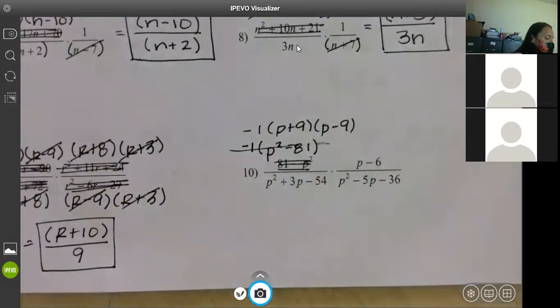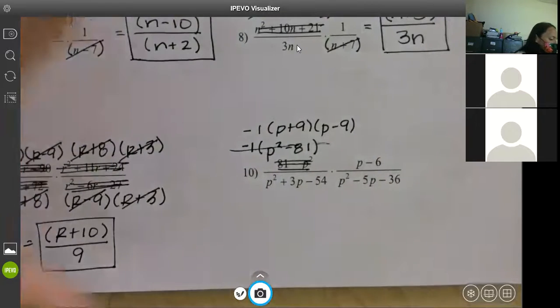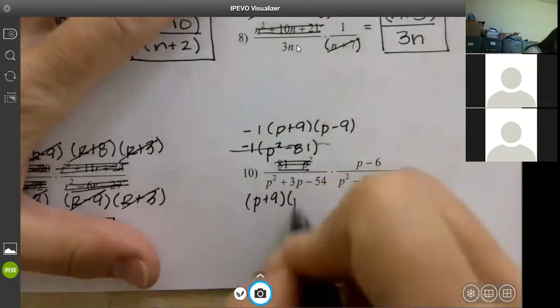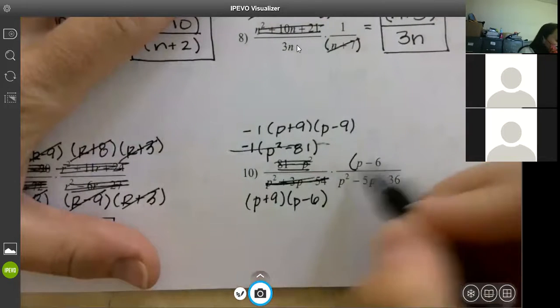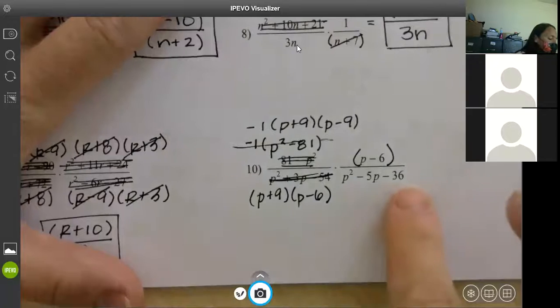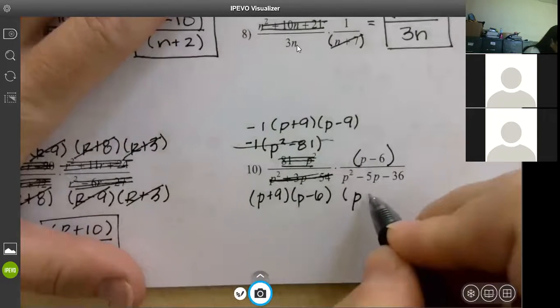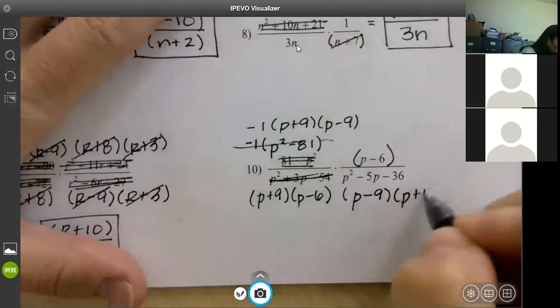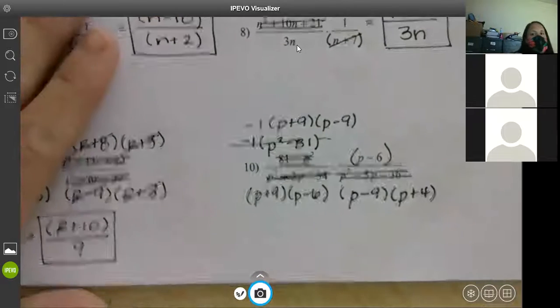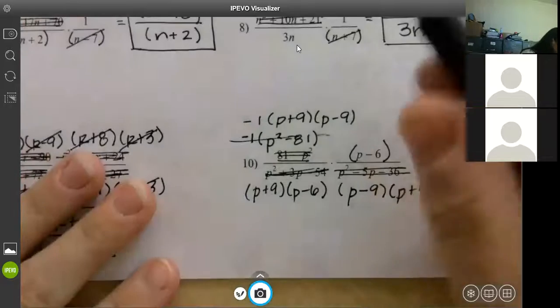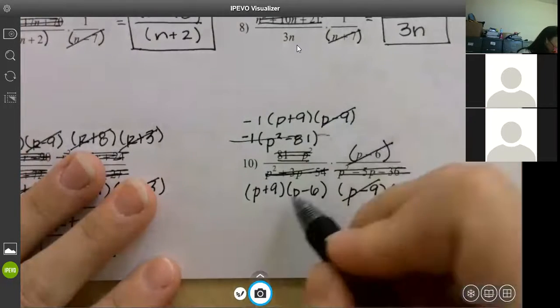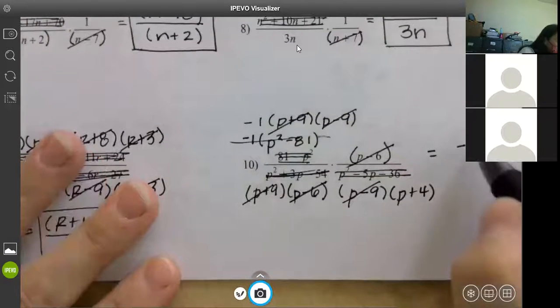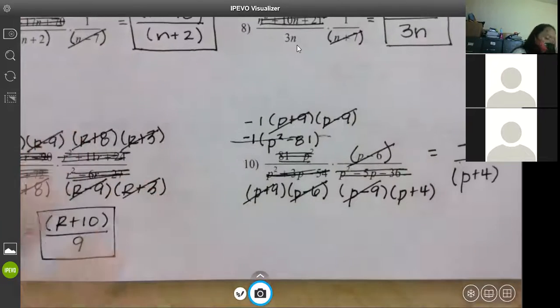Factors of negative 54 that add to 3. Nine and negative six. So that one's done. P minus 6 will not factor because it's a singular P. Factors of negative 36 that add to 5. Nine and four. What kind of nine? Negative nine and positive four. Tell me what we can mark out. P minus 9, P minus 6, P plus 9. What did that leave me with on top? Negative 1. On the bottom? P plus 4. That's it, guys. That's all you're doing.